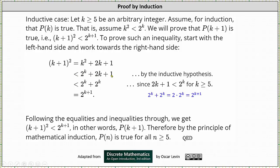From here, we perform another substitution where, since 2k plus 1 is less than 2 to the power of k for k greater than or equal to 5, if we substitute 2 to the power of k for 2k plus 1, then 2 to the power of k plus 2k plus 1 is less than 2 to the power of k plus 2 to the power of k. From here, 2 to the power of k plus 2 to the power of k is equal to 2 times 2 to the power of k, or 2 raised to the power of k plus 1.